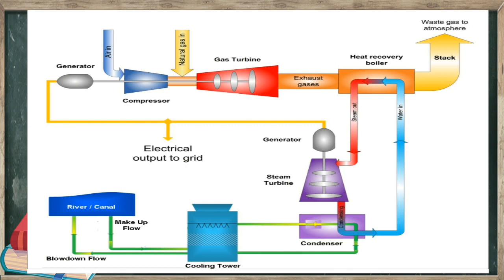A combined cycle power plant produces high power outputs at high efficiency up to 55% and with low emission.